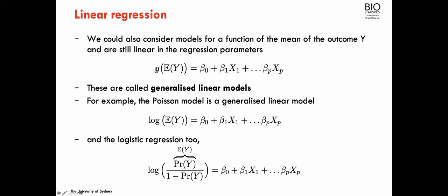If, for example, g is the logarithm, and I have an expression like this, this is the model that is usually called the Poisson regression. So the Poisson regression is also a generalized linear model, when y is a count.